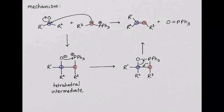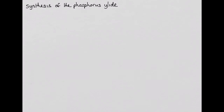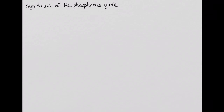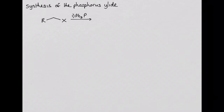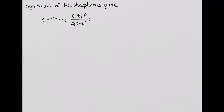The final thing to consider is how the phosphorus ilid is synthesized. The phosphorus ilid is synthesized through an SN2 reaction with triphenylphosphine. We start with an alkyl halide, which is first treated with triphenylphosphine. The product of this SN2 reaction is then treated with a strong base — an organolithium reagent — which produces the phosphorus ilid.